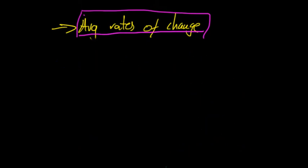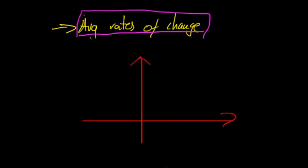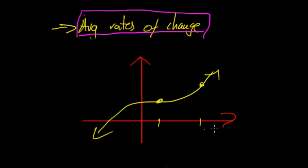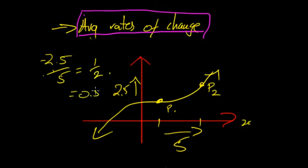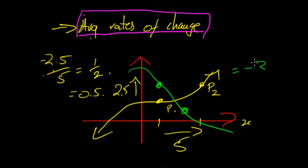The same approach applies on a graph. If you want to find the average rate of change between two points, say there's a change in x of 5 and a change in y of 2.5, then the average rate of change is 2.5 divided by 5, which gives 0.5. It could also be a negative rate of change — if the graph is going down in y, for example if you're reducing speed or reducing pay.